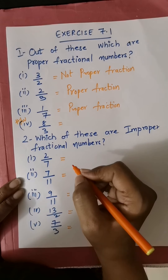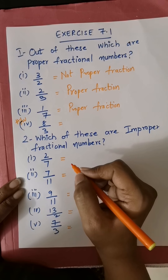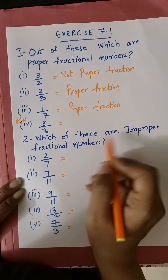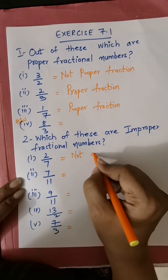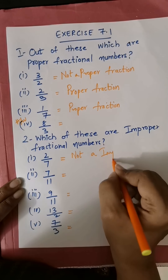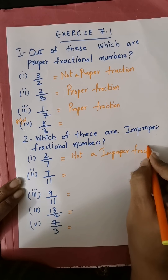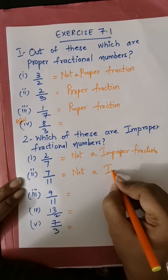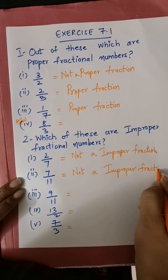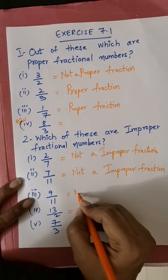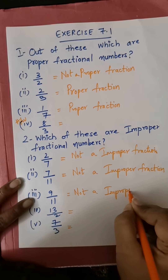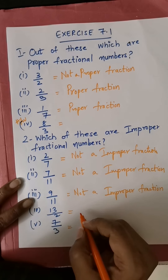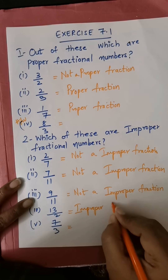Which of these are improper fractions? In improper fractions the numerator is more than the denominator. 2 by 7 — it is not improper, it is a proper fraction. 7 by 11 — 7 is smaller, so again it is not an improper fraction. 9 by 11 — also not an improper fraction. 13 by 2 — the numerator is more than the denominator, so it is an improper fraction.